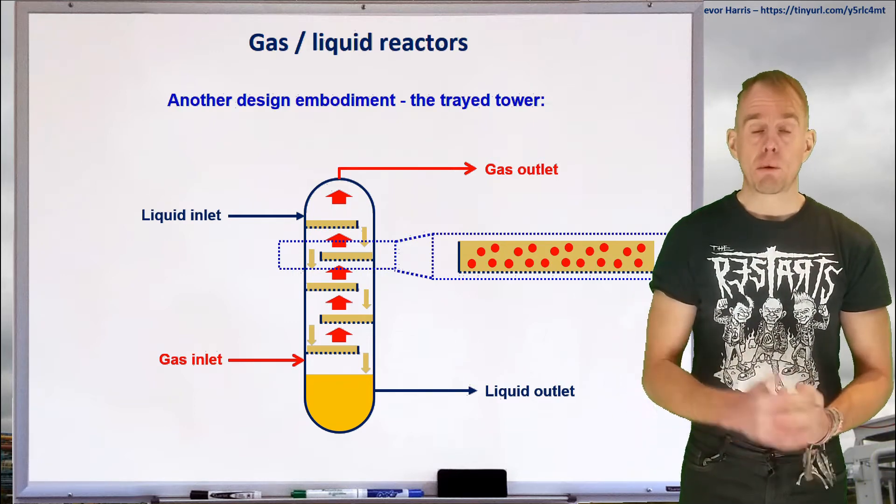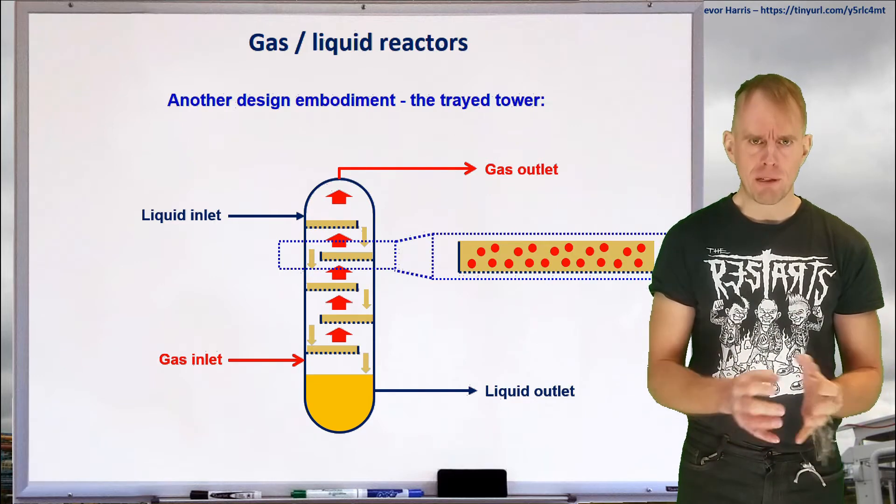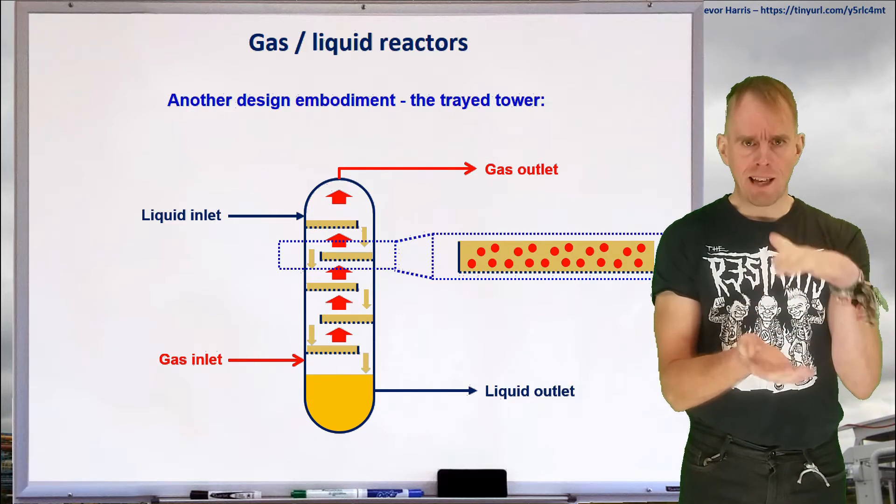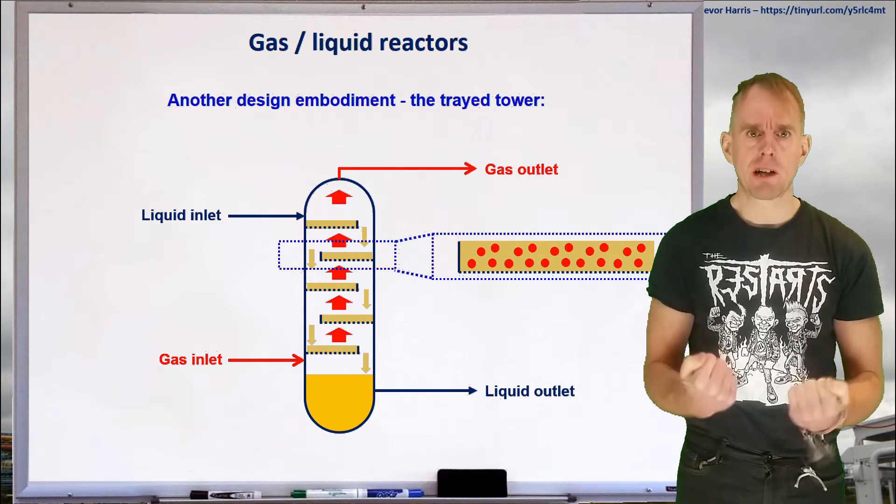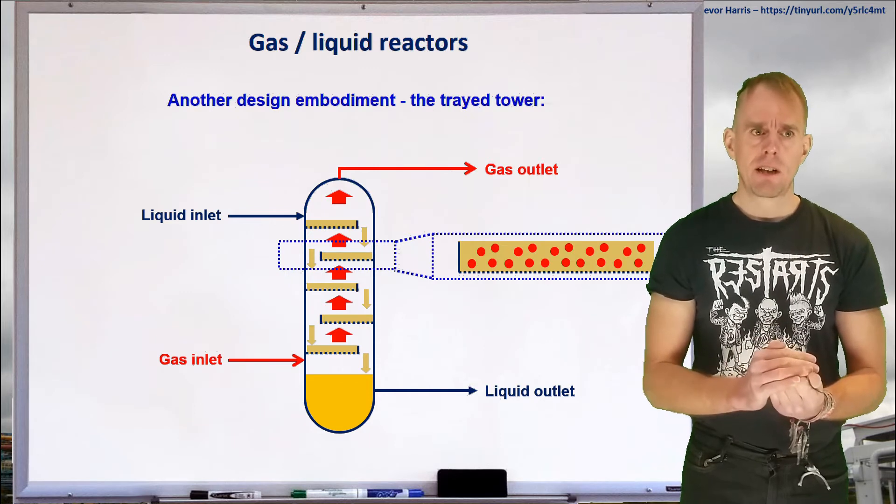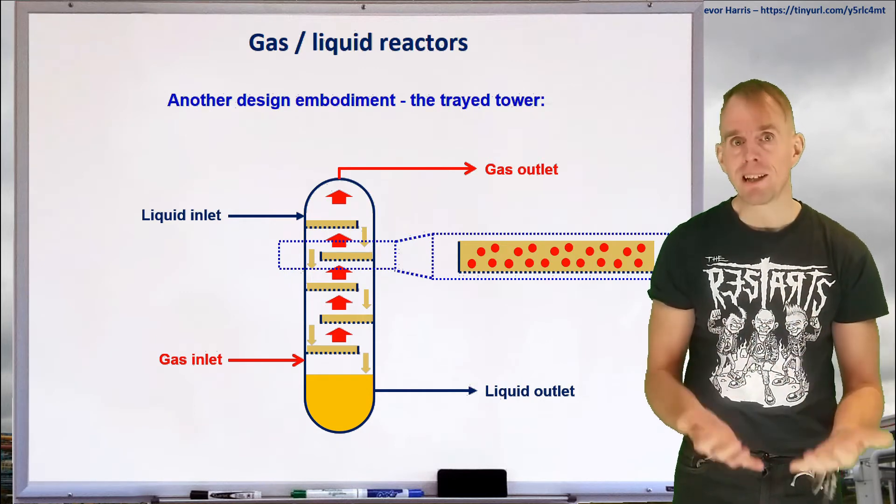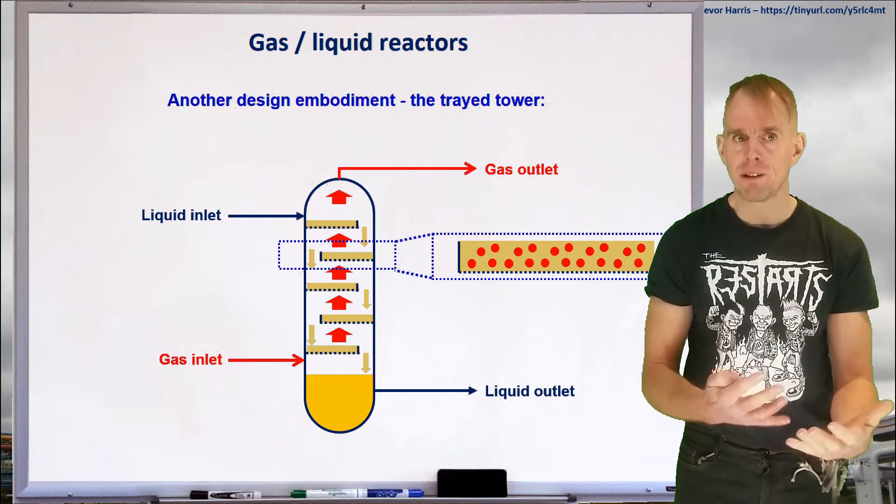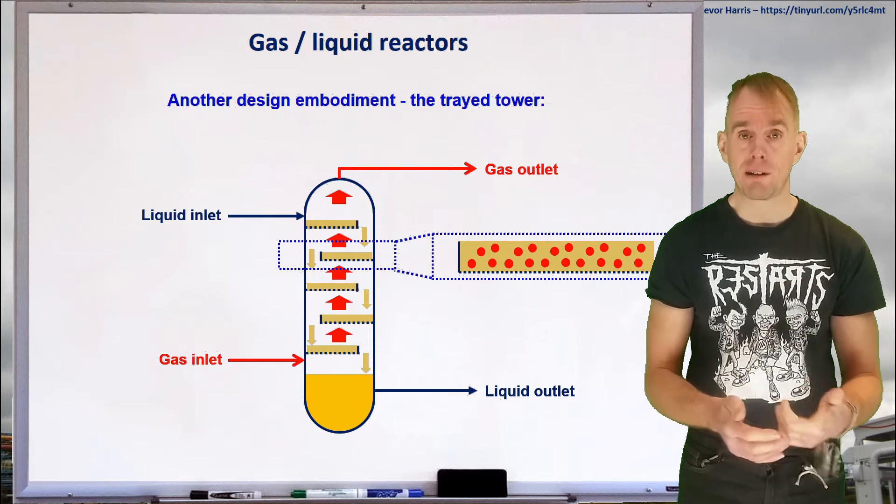Now, tray towers or sieve tray towers can suffer from some shortcomings. Because if you think about the static head of liquid on one of these plates, if there's not enough gas pressure going upwards to overcome rho GH, the liquid is just going to drain through the holes in the plate. But we know from distillation systems there are ways around this, and you just design more cunning plates, for example, bubble caps or valve trays.